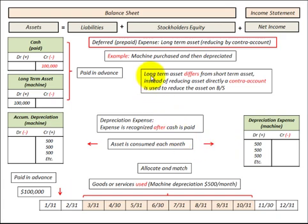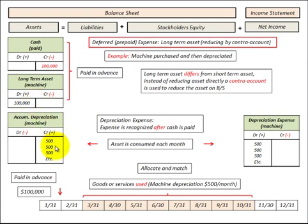Looking at the difference between a long-term asset and a short-term asset — something under a year like a prepaid expense on a consumable — we reduce the short-term asset directly. But for long-term assets we don't reduce it directly; we do it through a contra account on the balance sheet. That's how the contra account works on a prepaid or advance-paid asset that we reduce each period.